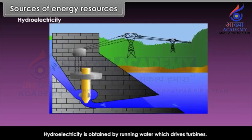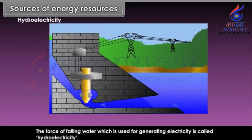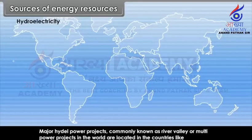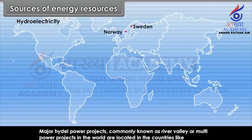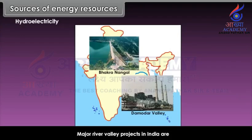Hydroelectricity is obtained by running water which drives turbines. The force of falling water used for generating electricity is called hydroelectricity. Major hydro power projects, commonly known as river valley or multi-purpose projects, are located in countries like Sweden, Norway, Switzerland, Canada and the USA. Major river valley projects in India are Bhakra Nangal and the Damodar Valley Corporation, which produce hydroelectricity.